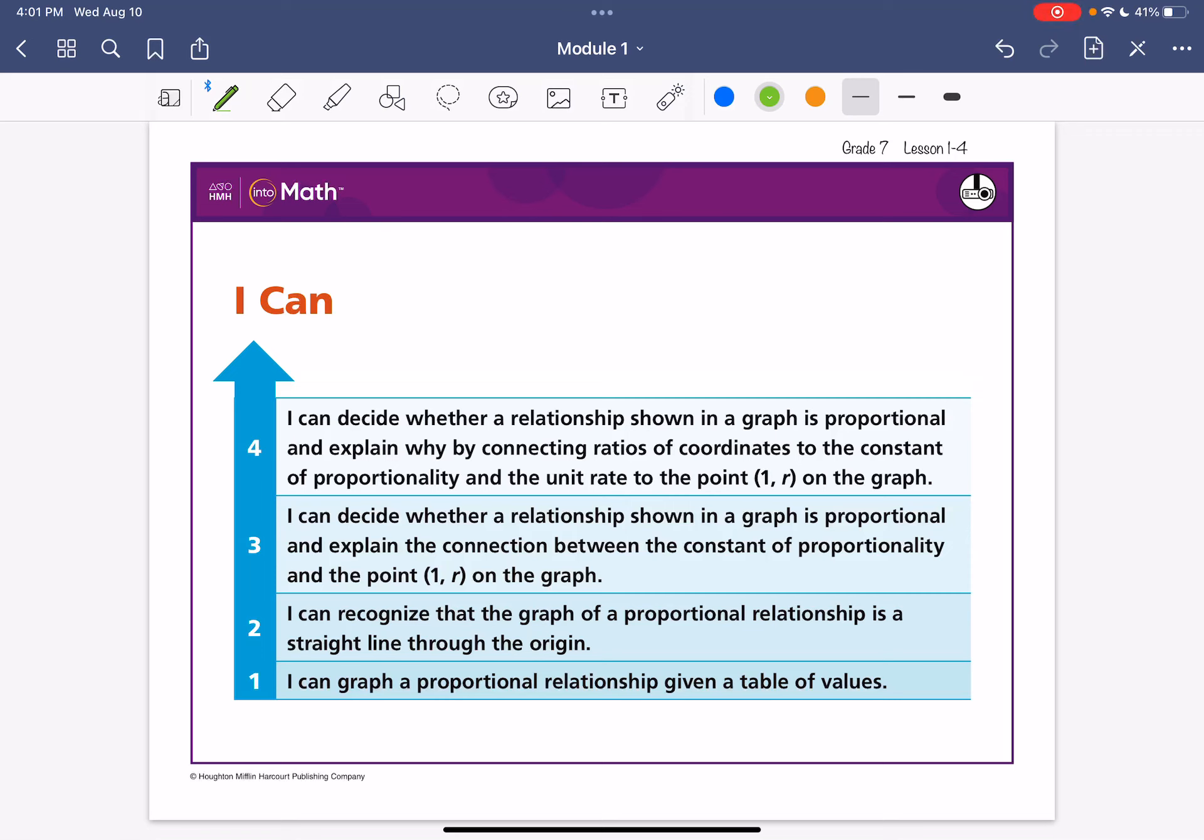Hello lovelies, we are off to lesson 1-4 for grade 7 intro math. Today's I can statement is I can decide whether a relationship shown in a graph is proportional and explain the connection between the constant of proportionality and the point (1,r) on a graph.